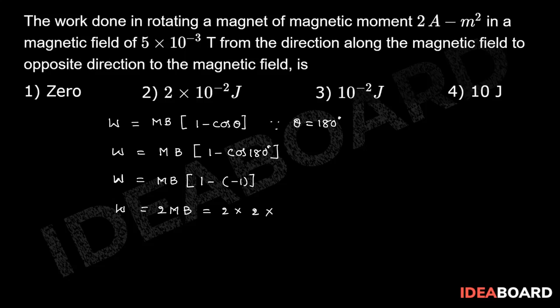2 ampere meter square and B value 5 into 10 power minus 3, which is equal to 2 into 10 power minus 2 joules.